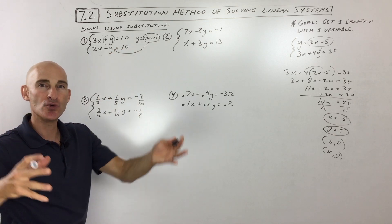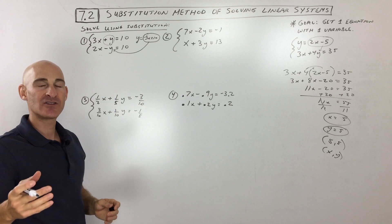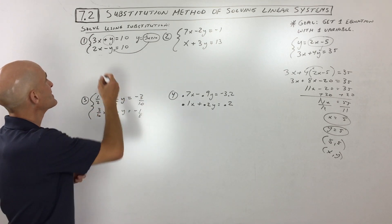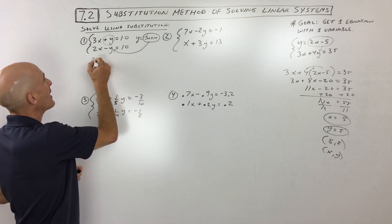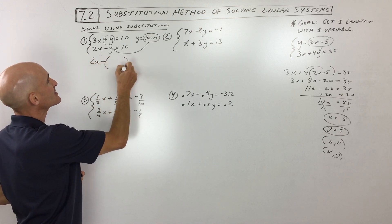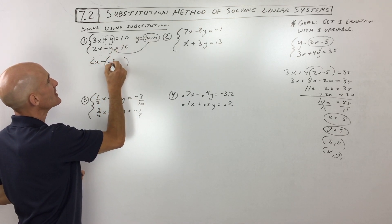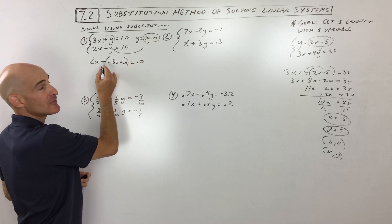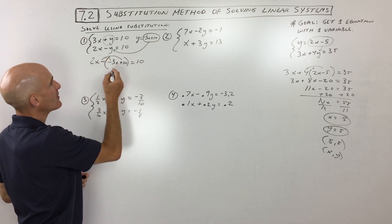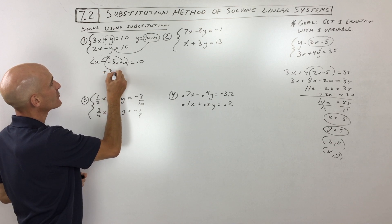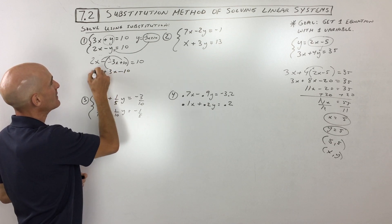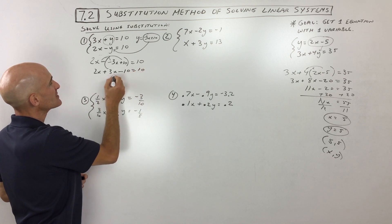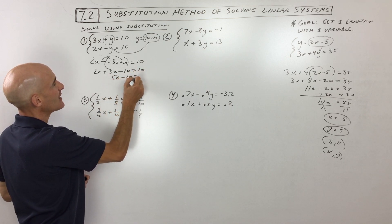Now we know what y equals — negative 3x plus 10. I'm going to put that in place of y in the other equation. It's just like a substitute teacher — you swap them out. So we've got 2x minus, and instead of y, I'm going to put what y equals in parentheses — I want to treat it like a group. So now you see this negative here. I'm going to distribute the negative into the parentheses, giving us positive 3x minus 10. Bring down the 2x. This is 5x minus 10 equals 10.